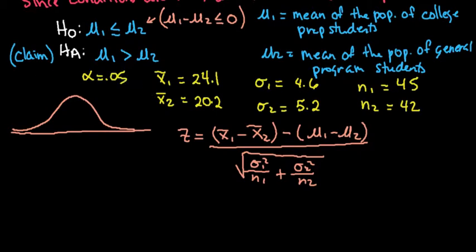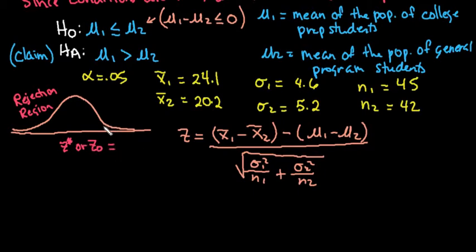Since we are using a rejection region, we will sketch a model and find our critical value z-star (also written z-naught depending on your textbook). The rejection region is shaded at the alpha level of 5%. I knew it was a right tail because of the alternative hypothesis — the direction of the alternative always tells you whether it's a right tail, left tail, or two tail. I'll use a t-table to find the critical value.